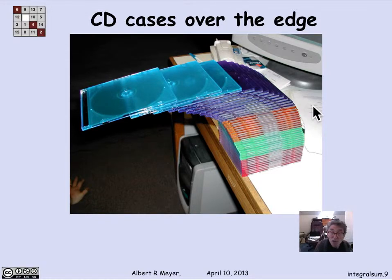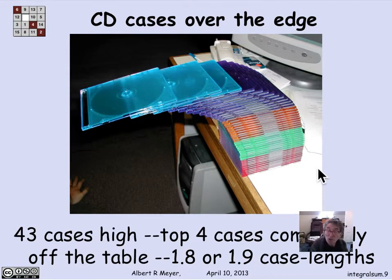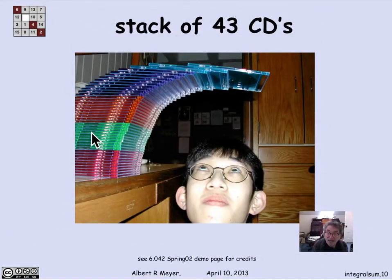But CD cases work very well. They are more rigid. They don't compress easily. And they're very lightweight so that they don't cause problems with distortions because of the size of the stack. And so you can actually get CD cases to stick out pretty far. This is an example where it's 43 CD cases high and the top four cases are completely past the edge of the table. The leftmost edge is about 1.8 or 1.9 case lengths past the table.